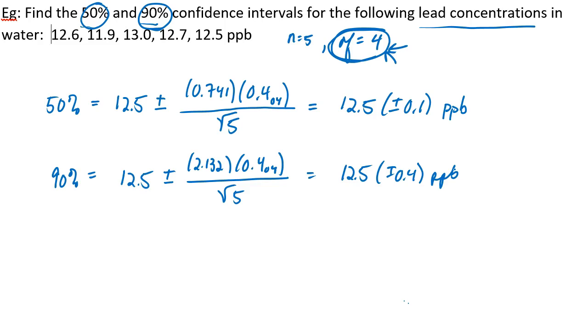So oftentimes, the way that we interpret a confidence interval is we say that we can be 90% confident that the true mean falls within this interval. And isn't it interesting to note that when we're only 50% confident, that interval is smaller? That is okay to interpret the confidence interval that way, but really, there's more to it. There really is a lot more to a confidence interval.